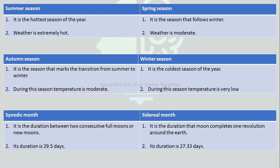Difference between Synodic Month and Sidereal Month: The Synodic Month is the duration between two consecutive full moons or new moons, whereas the Sidereal Month is the duration in which the Moon completes one revolution around the Earth. The Synodic Month has a duration of 29.5 days, whereas the Sidereal Month has a duration of 27.33 days.